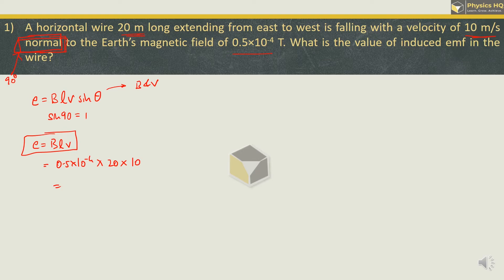This will give us 10. So we will have 10 raise to minus 4 and 10 raise to 2 will give us 10 raise to minus 2. So this is 10 x 10 raise to minus 3, which is 10 millivolt.